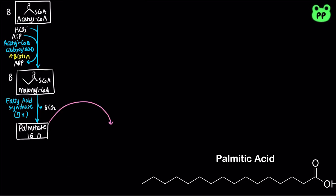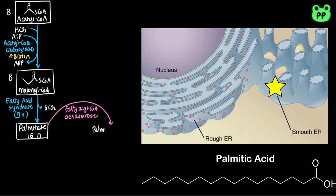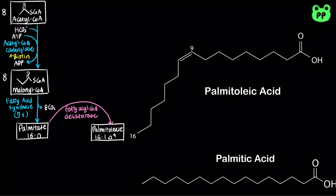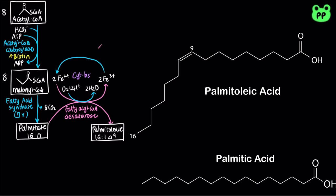Palmitate can undergo desaturation at the 9th carbon by fatty acyl-CoA desaturase, which is located in the smooth endoplasmic reticulum of the liver, to produce palmitoleate. Fatty acyl-CoA desaturase is a mixed-function oxidase, in which the oxidation of fatty acyl-CoA is coupled to the reduction of oxygen to water, and the oxidation of 2 iron cations in 2 cytochrome B5, which is subsequently reduced by cytochrome B5 reductase by coupling to the oxidation of FADH2 to FAD.